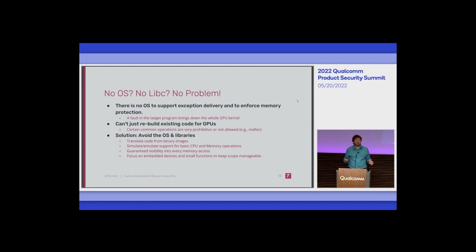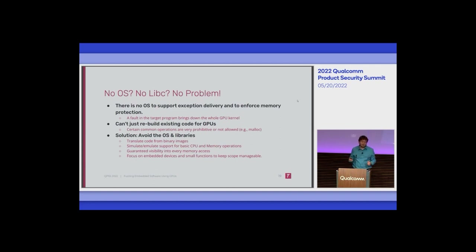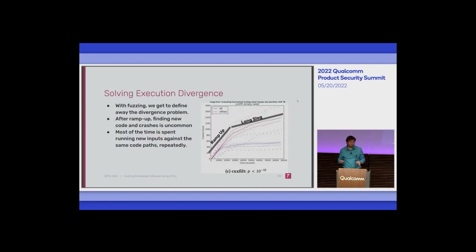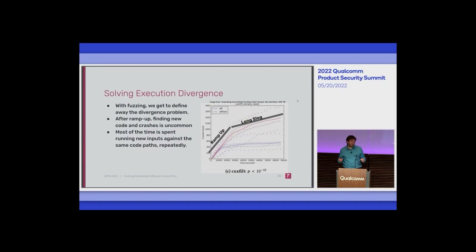We do fairly good support for CPU and memory operations by statically translating the instruction set and having an MMU that gives us visibility into every memory access. Since there are a lot of static translation issues — the bigger your program the harder this is — you can focus on embedded devices and small platforms to keep the scope manageable. If you google 'how do I run CPU code on a GPU,' a lot of people will tell you it's impossible, and they're right for normal reasons.